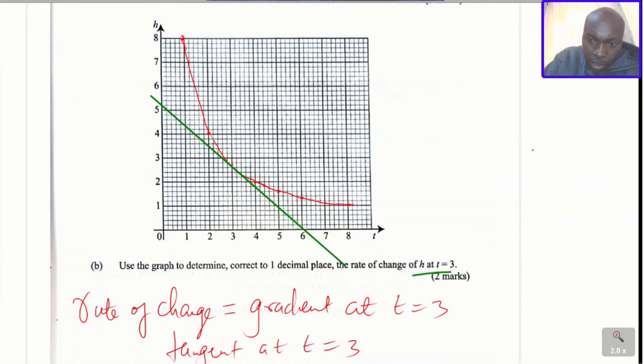So the first point is when t is equals to 3, then h, we read the value of h. So we just need to go straight up and read the value of h. This is the point. So 2.7. So when t is equals to 3, h is equals to 2.7.